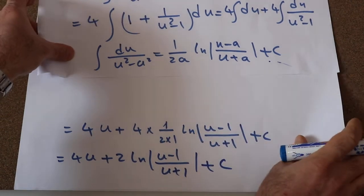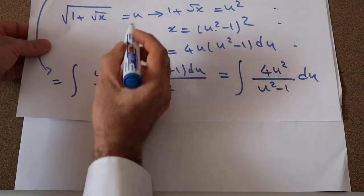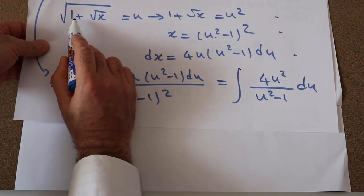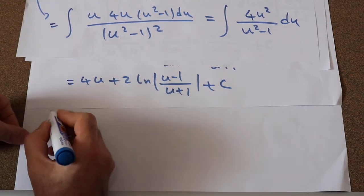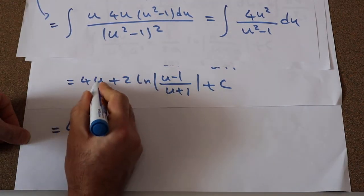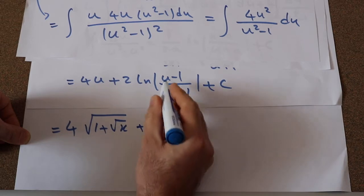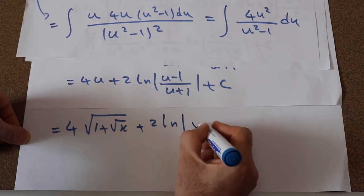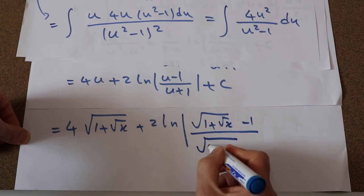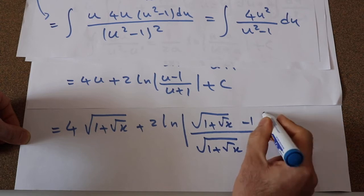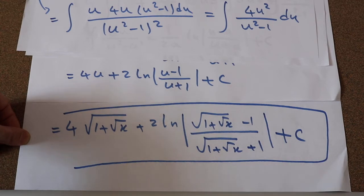All you need to do now is to substitute the parameter u with the definition of u given at the beginning: u is equal to square root of 1 plus square root of x. So substituting, the final answer is 4 times square root of 1 plus square root of x, plus 2 ln of (square root of 1 plus square root of x minus 1) divided by (square root of 1 plus square root of x plus 1), plus c, which is the constant of integration. That is the solution to our integral.